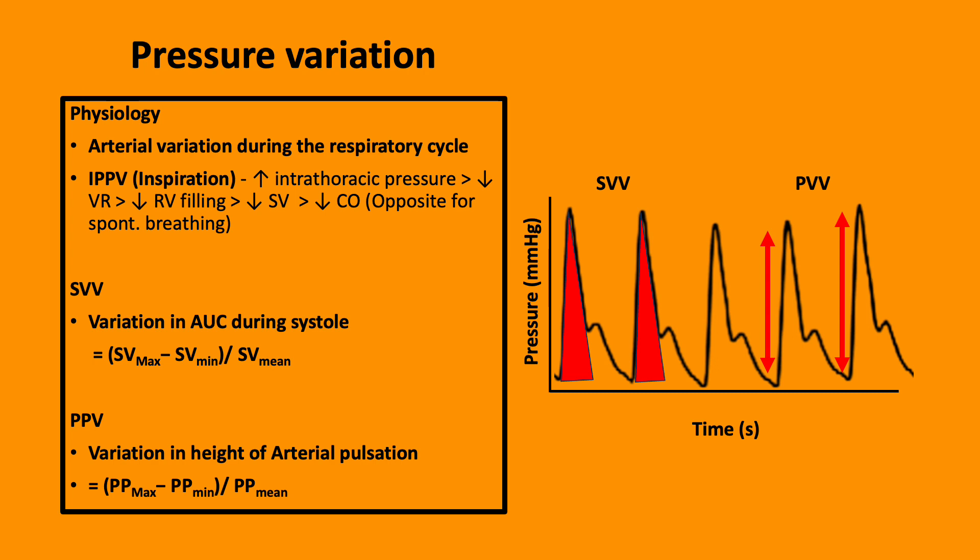Multiple techniques can exploit these changes in the waveform to determine the cardiovascular status. These techniques include the SVV and PPV, which are indicators of fluid responsiveness. The stroke volume variation is the difference between the maximum and minimum stroke volume divided by the average of two values.